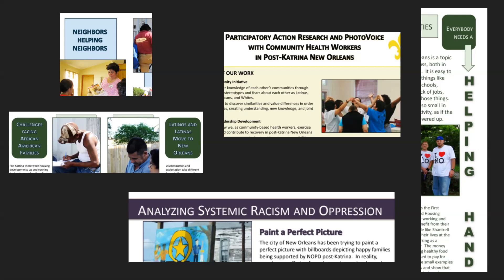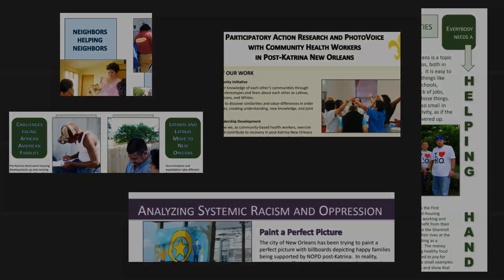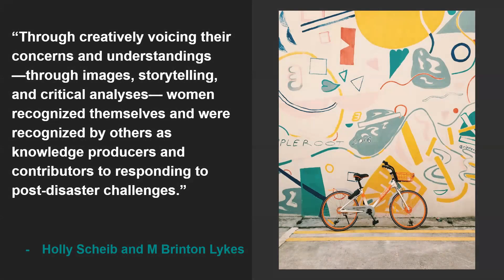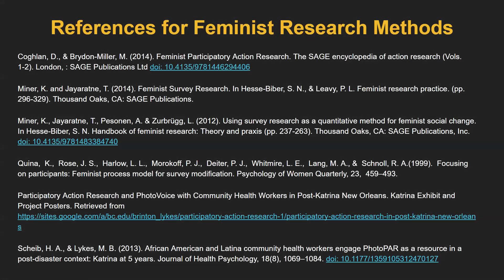Throughout the project, community health workers created photo texts — individual images with individual stories tied to them. They photographed each other in day-to-day work, images of Katrina's after-effects, and evidence of unhealthy challenges in their community — violence, billboards promoting junk food or alcohol. They selected photo texts, wrote accompanying stories, and created collective stories to promote healthy living. These were shared with community health organizations, conferences, and New Orleans residents at community markets and festivals.